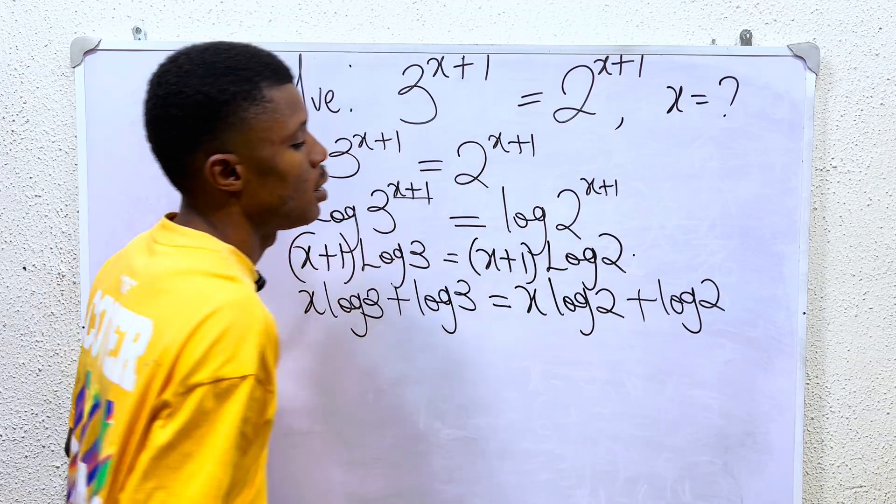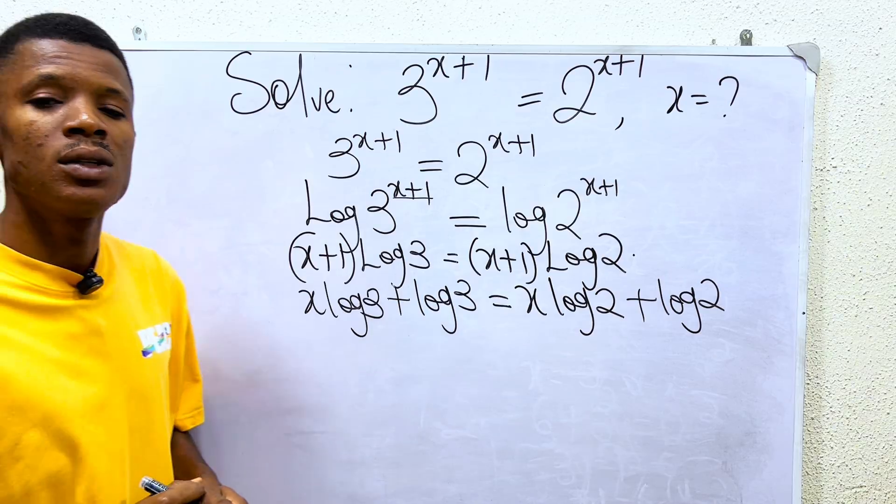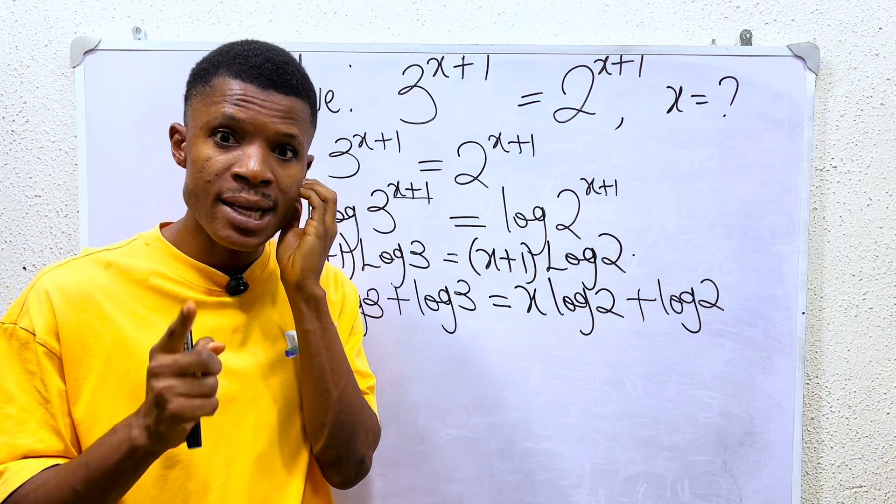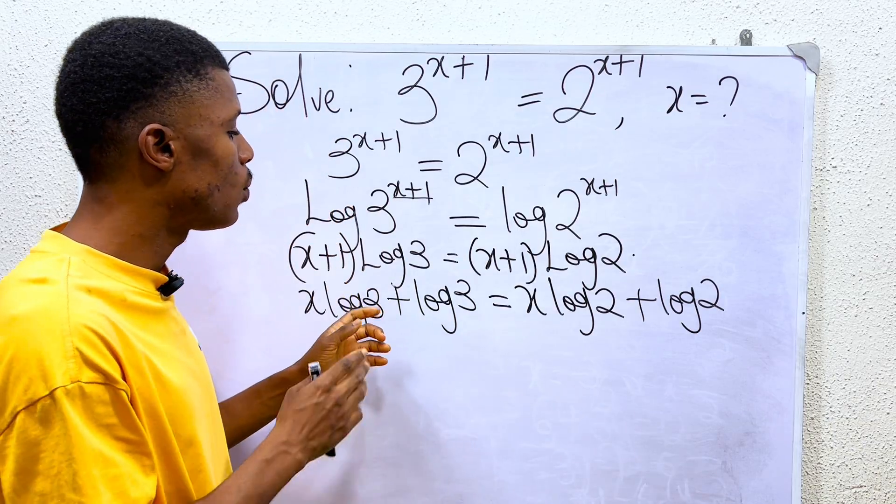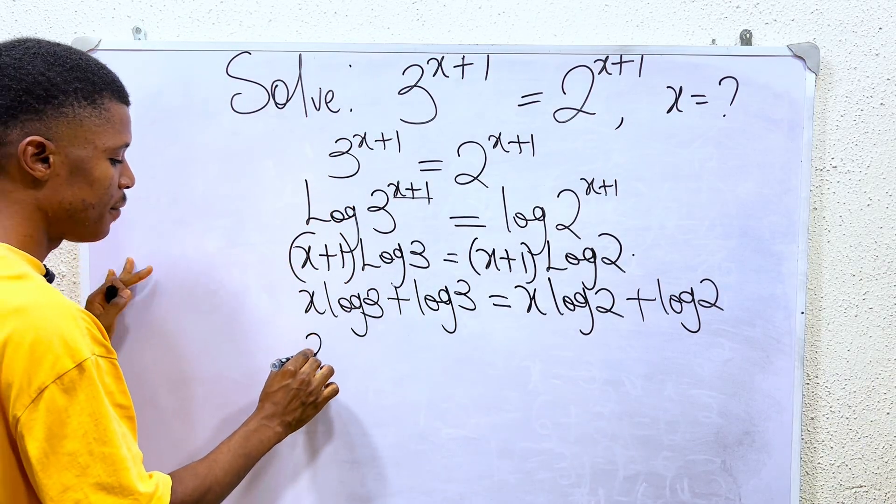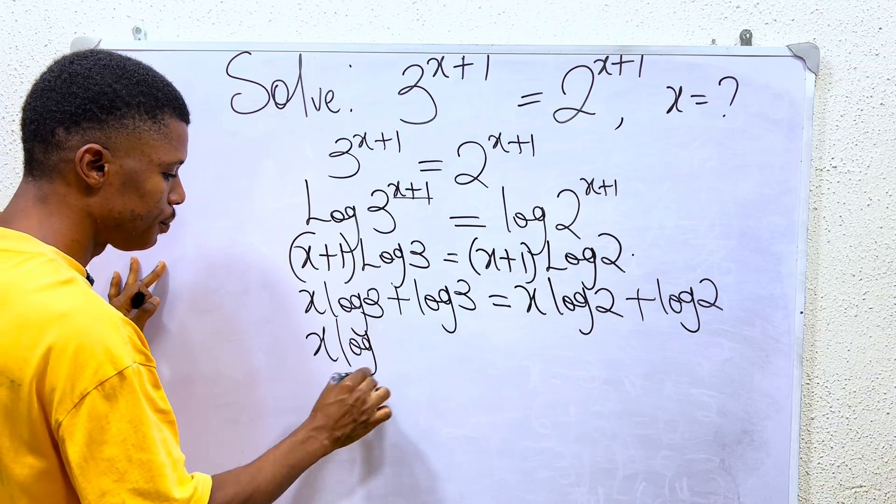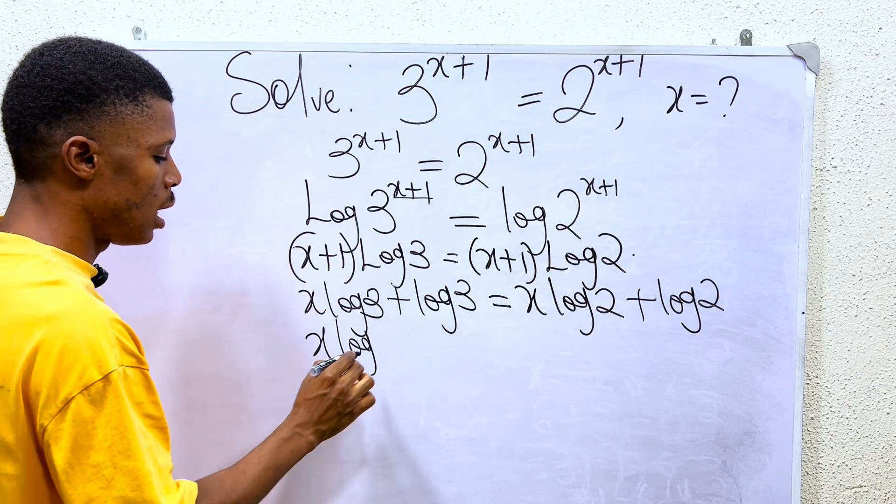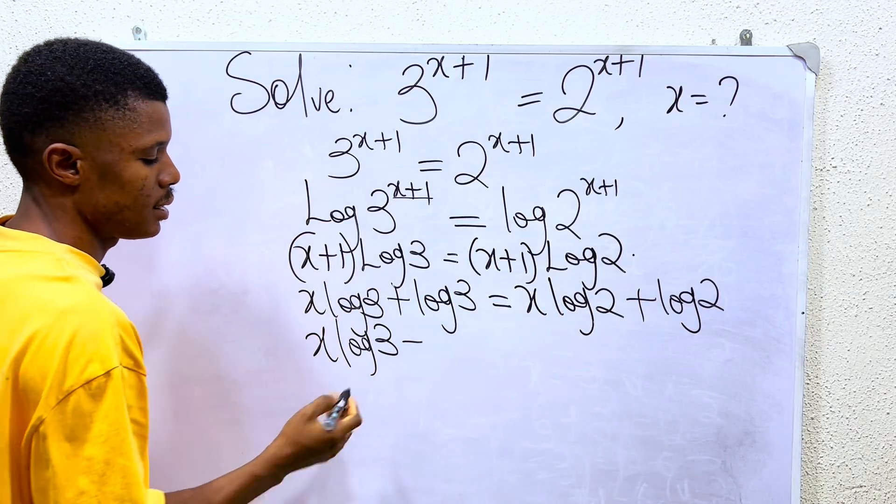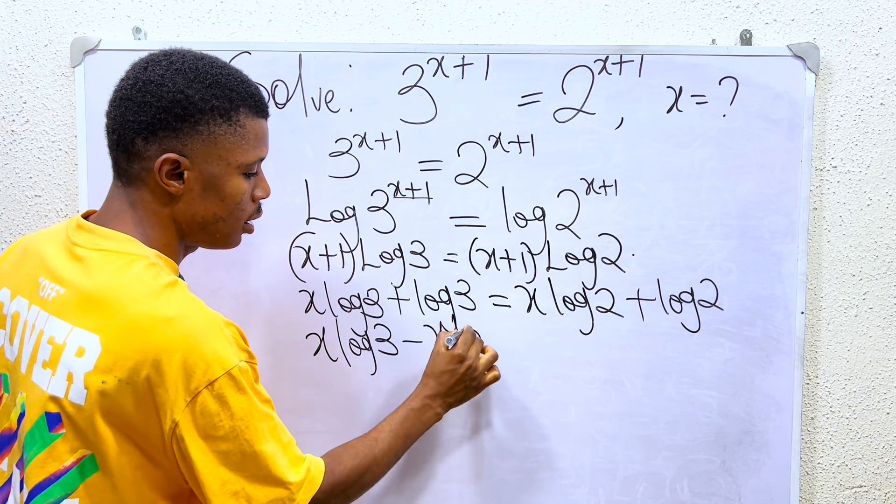Then the next thing we do is to collect like terms: to bring the one that has x together and also bring the one that has just the log together. So what do we have? We have x into log 3 minus—we have to subtract this one that has x—we have it as x log 2.